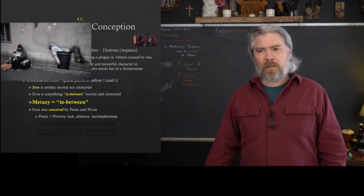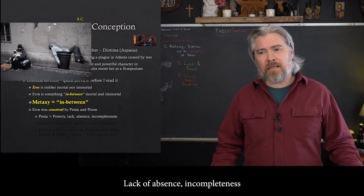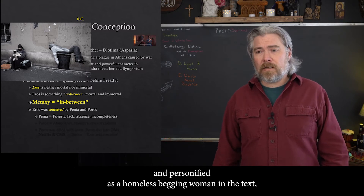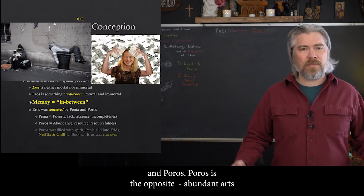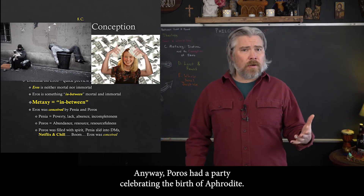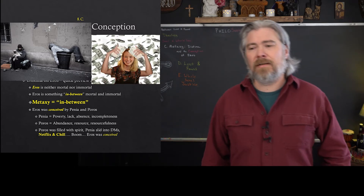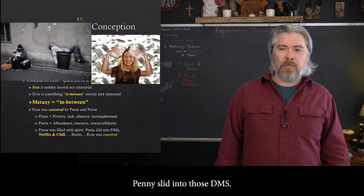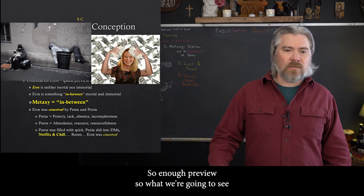Penia is another name meaning poverty — lack, absence, incompleteness — personified as a homeless, begging woman in the text. She's conceived by the union of Penia and Poros. Poros is the opposite: abundance, resource, resourcefulness. Poros had a party celebrating the birth of Aphrodite, was filled with spirits, got drunk, and passed out in the garden. Penia, seeing an opportunity, got busy — and Eros was conceived. Okay, so enough preview.